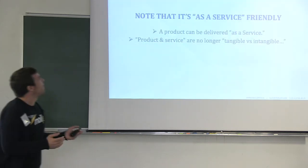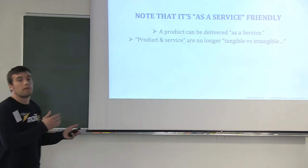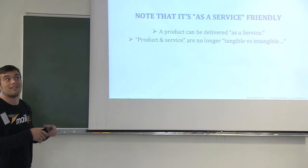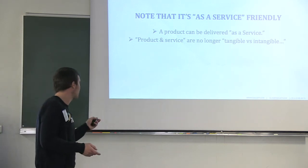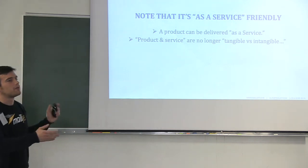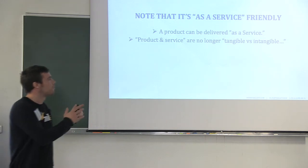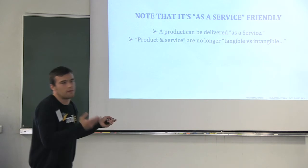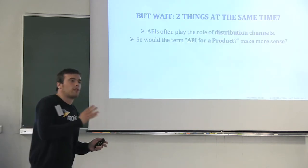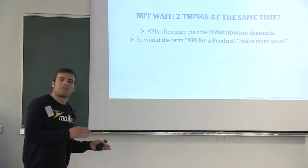However, a service is not the opposite of a product, and a product can be delivered as a service. These terms are not opposed in today's digital age. The opposition I was making between service and product was only for the historical definitions. Today, tangible versus intangible — it doesn't work anymore. So we understand what a product is and what a service is, and API as a product is beginning to be clear.